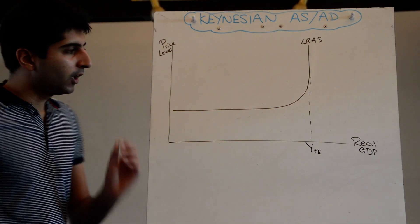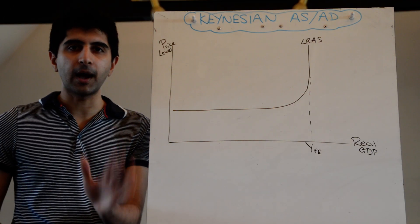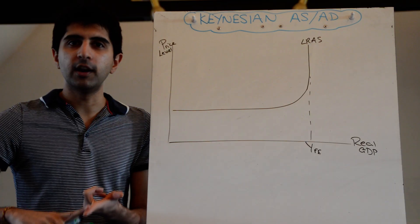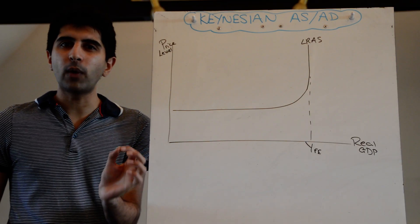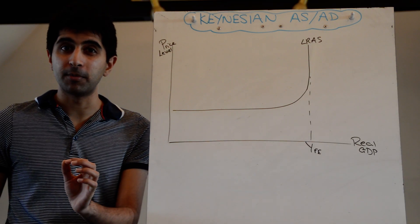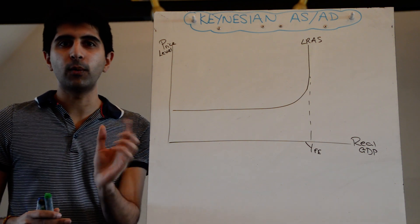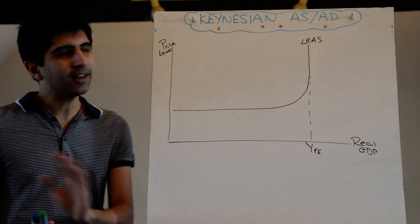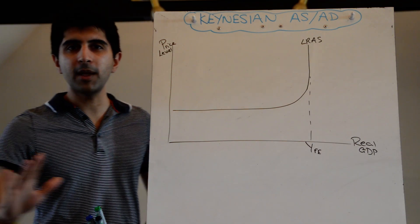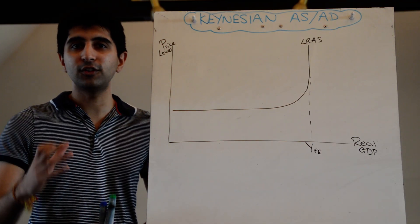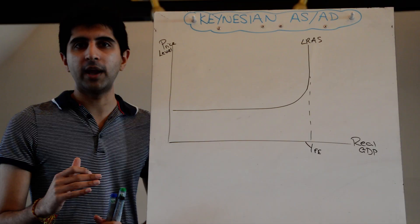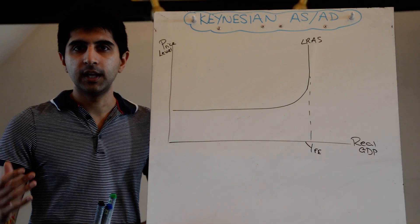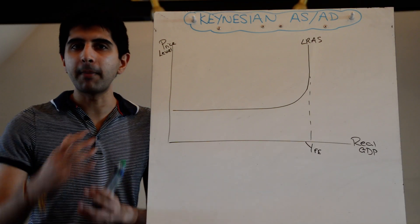His fundamental disagreements come with this notion of short run and long run—the fact that wages change in the long run and become variable. Classical economists believe when that happens the economy will self-heal. Keynes says no, that's a terrible assumption because workers do not like to reduce their wages in a recession.